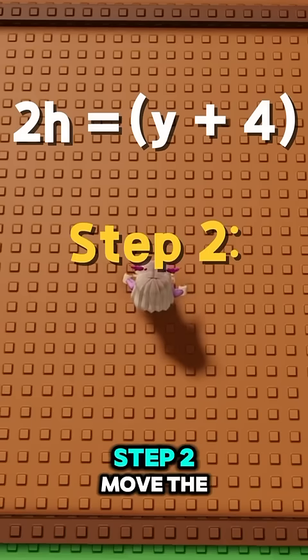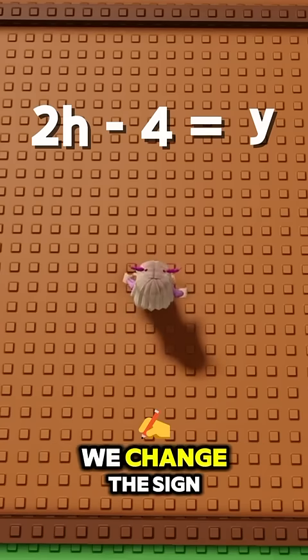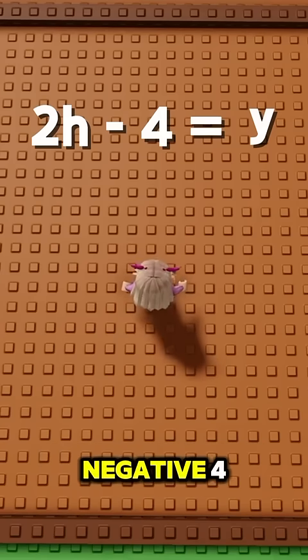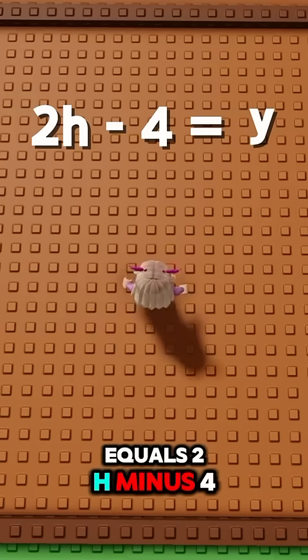Step 2: Move the 4 over the equal sign. Remember, when it moves, we change the sign. So positive 4 becomes negative 4. That gives us y equals 2h minus 4.